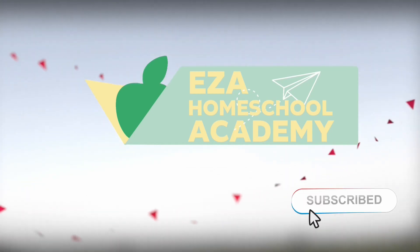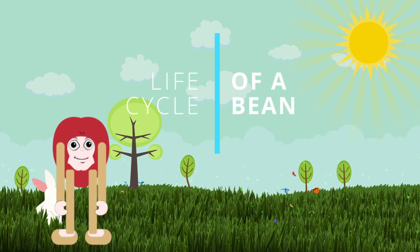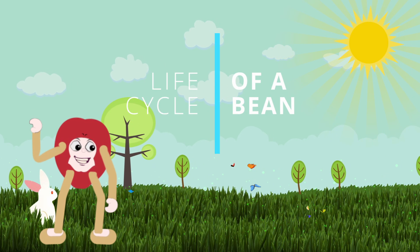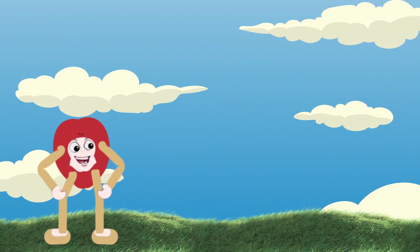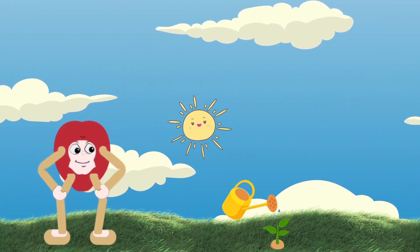Welcome to EZ-A Homeschool Academy. Let's learn about the life cycle of a bean. A bean is a living thing that requires sunlight, water, and air to grow.